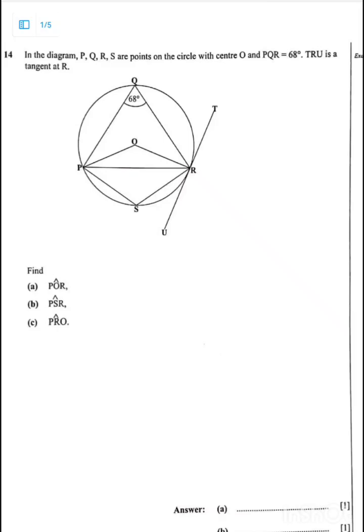So this is a 2024 GCE equation. It says in the diagram, P, Q, R, S are points on the circle with center O. And angle PQR is 68 degrees, while the other angle has also been given. TRU is a tangent at R.